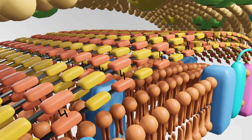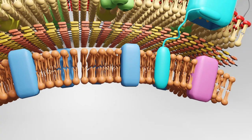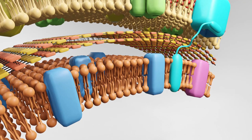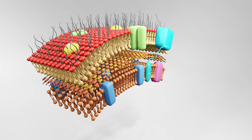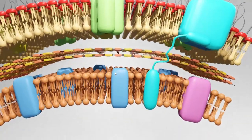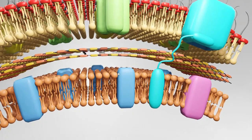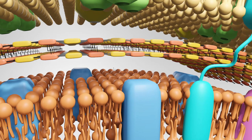Inside the peptidoglycan layer is the periplasmic space, and further inside is the plasma membrane, with the cytoplasm of the bacterial cell adjacent to the plasma membrane. That covers this general diagram as a brief explanation of the cell wall. In upcoming videos, the structure of peptidoglycan will be presented in detail — including how the four amino acids form the peptide bridge or stem peptide, and the full structures of N-acetylglucosamine (NAG) and N-acetylmuramic acid (NAM), the sugar moieties of peptidoglycan.